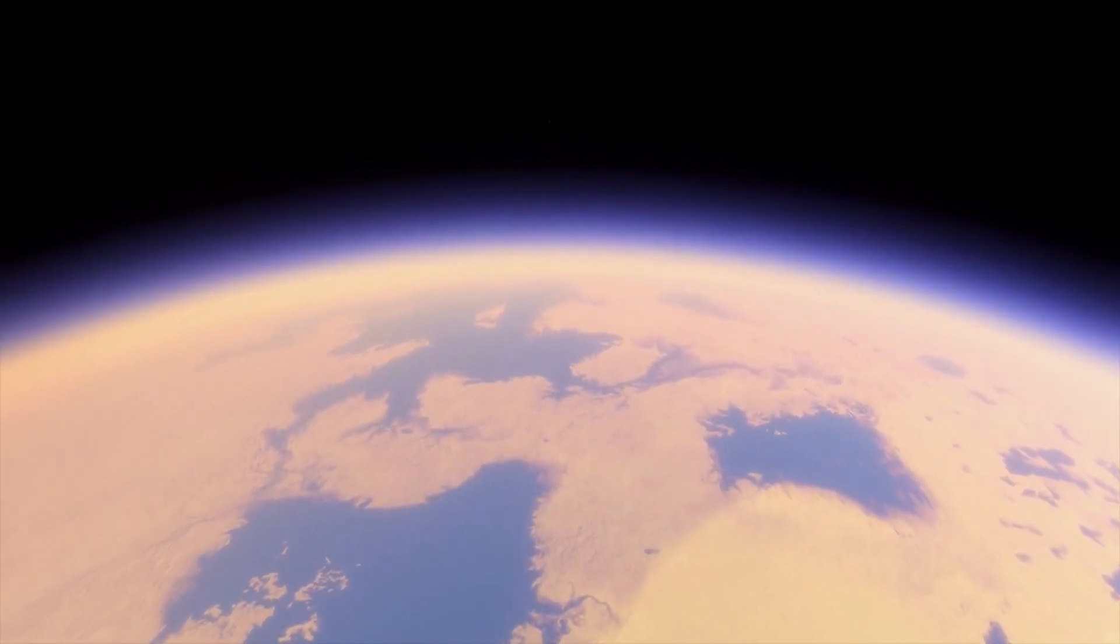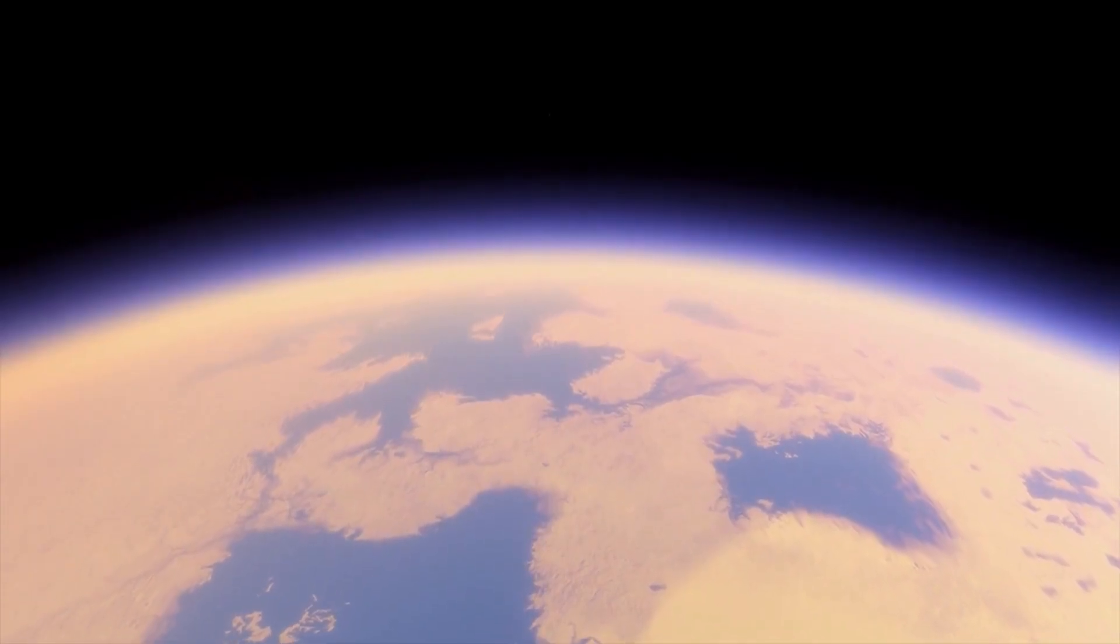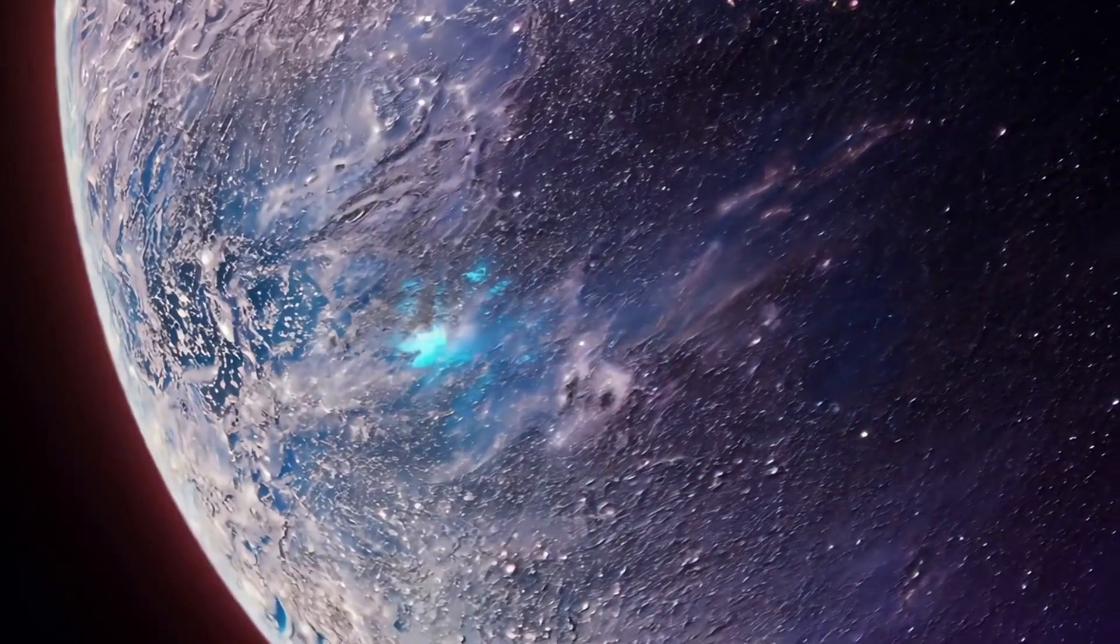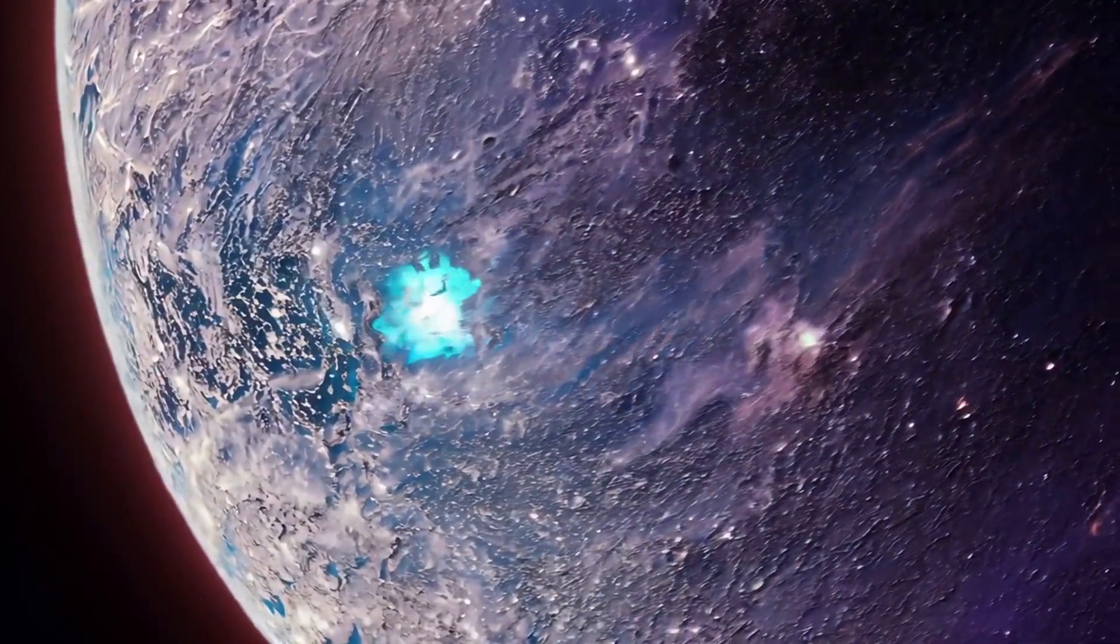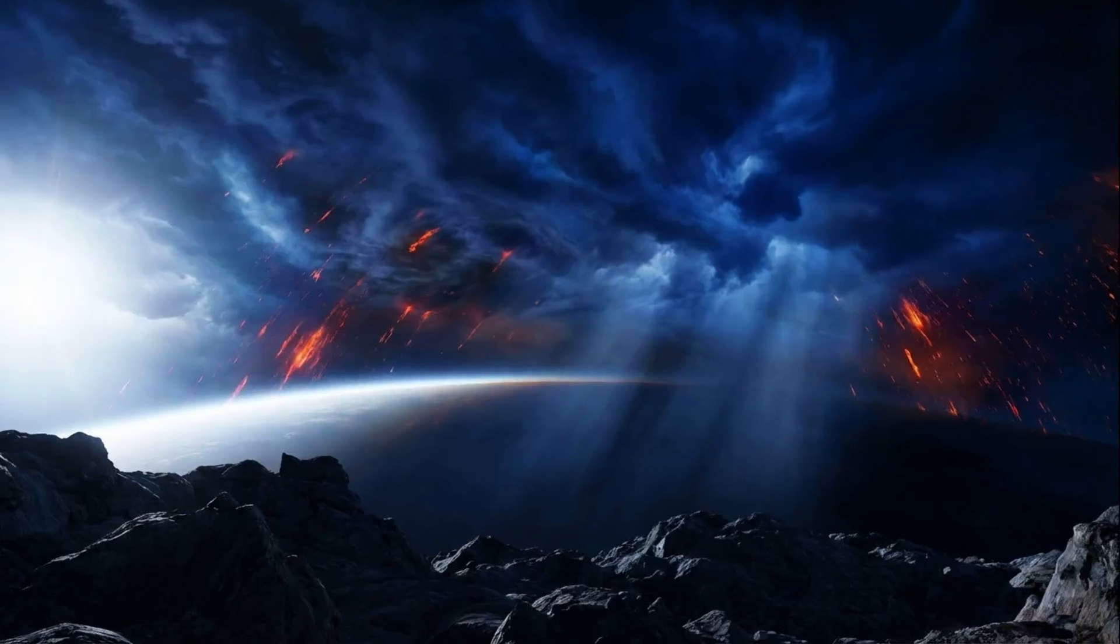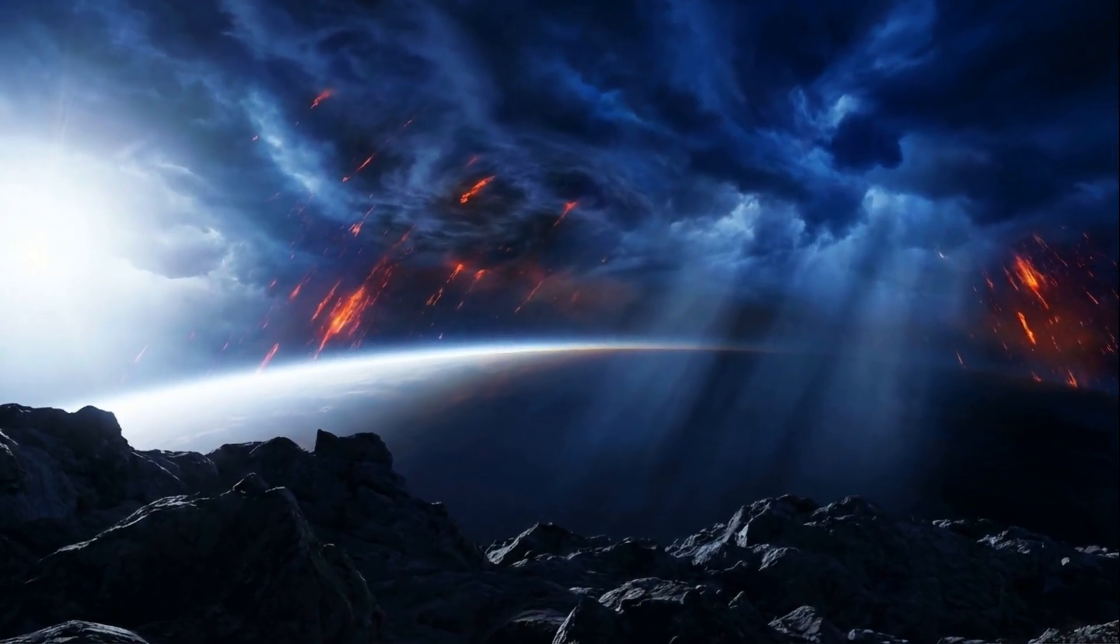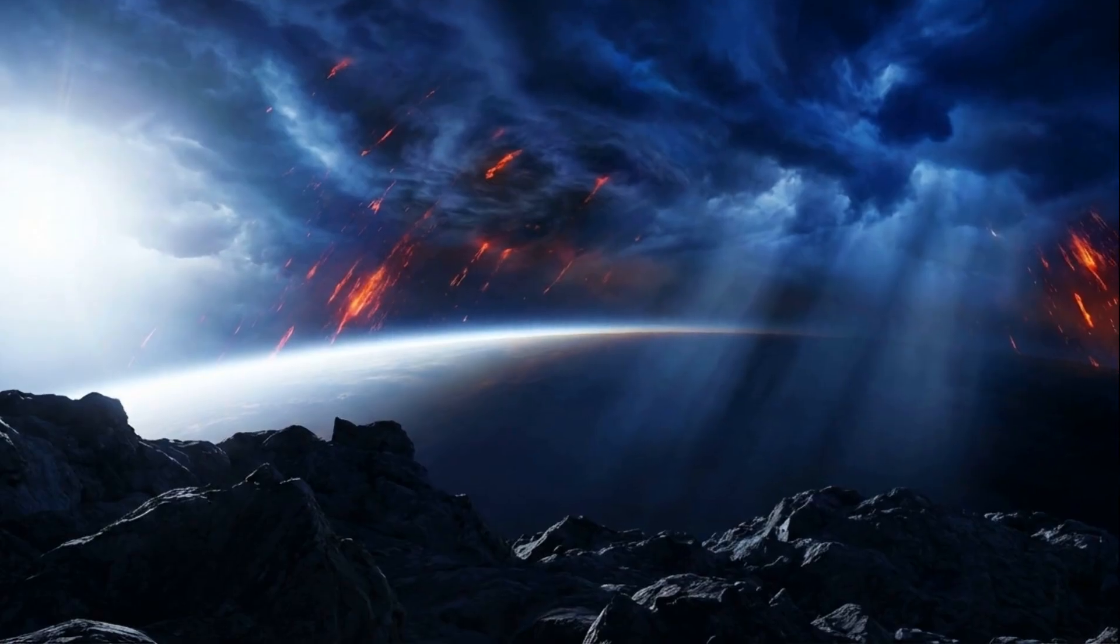Because if you were to descend into those blue clouds, you wouldn't find water. You wouldn't find life. You would find yourself in a world made of nightmares. This is HD 189733b, the planet where it rains glass sideways.